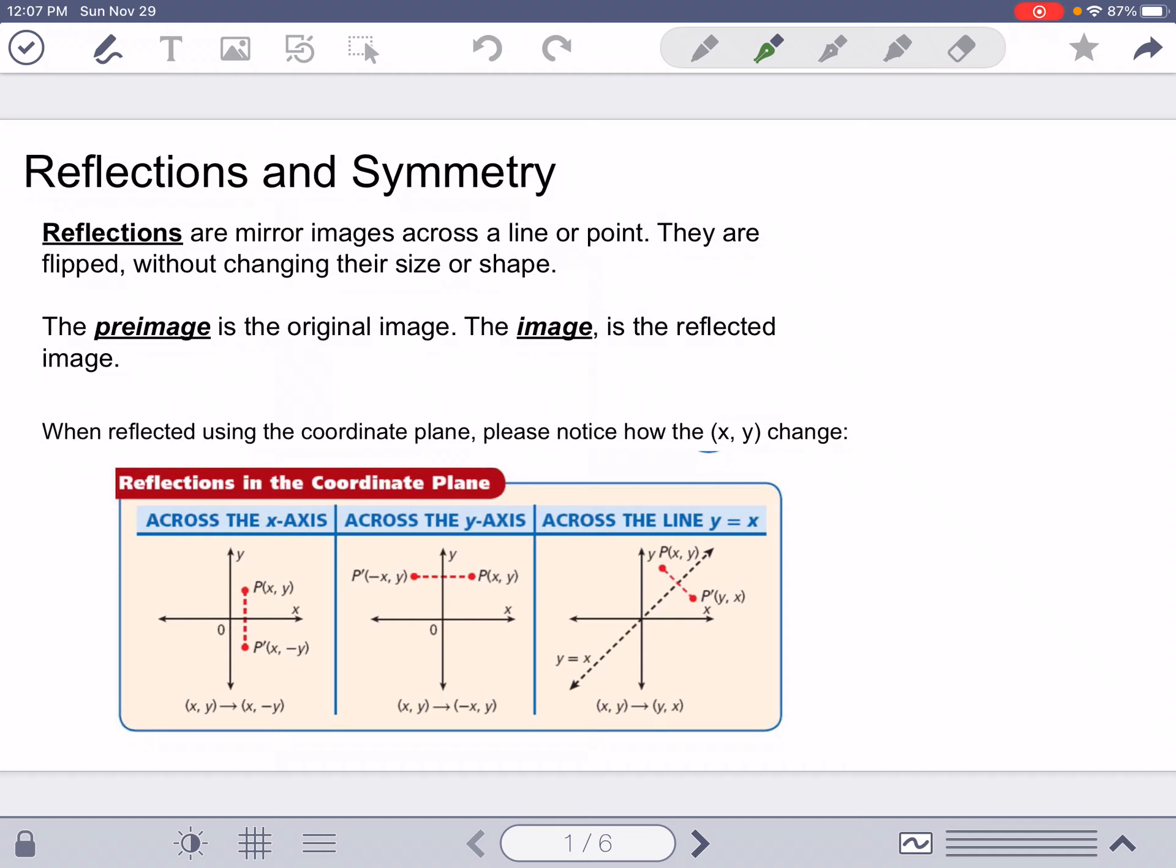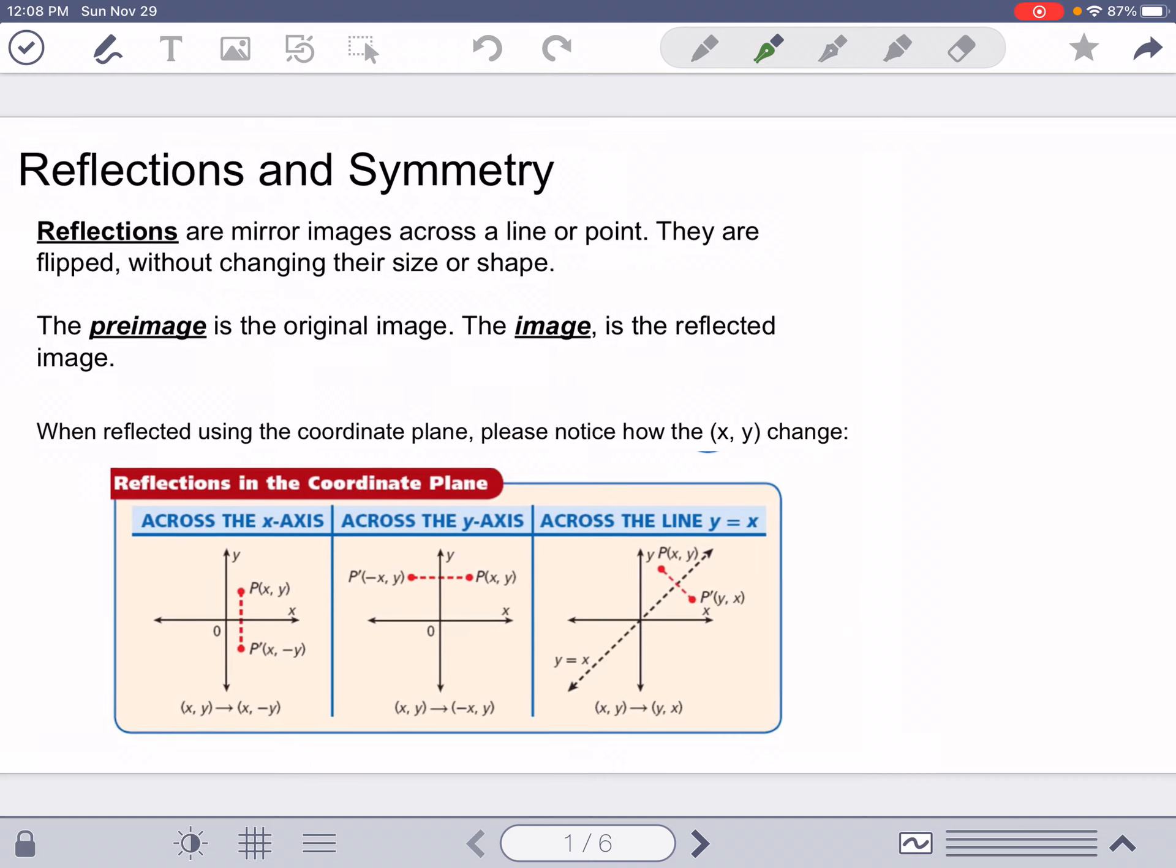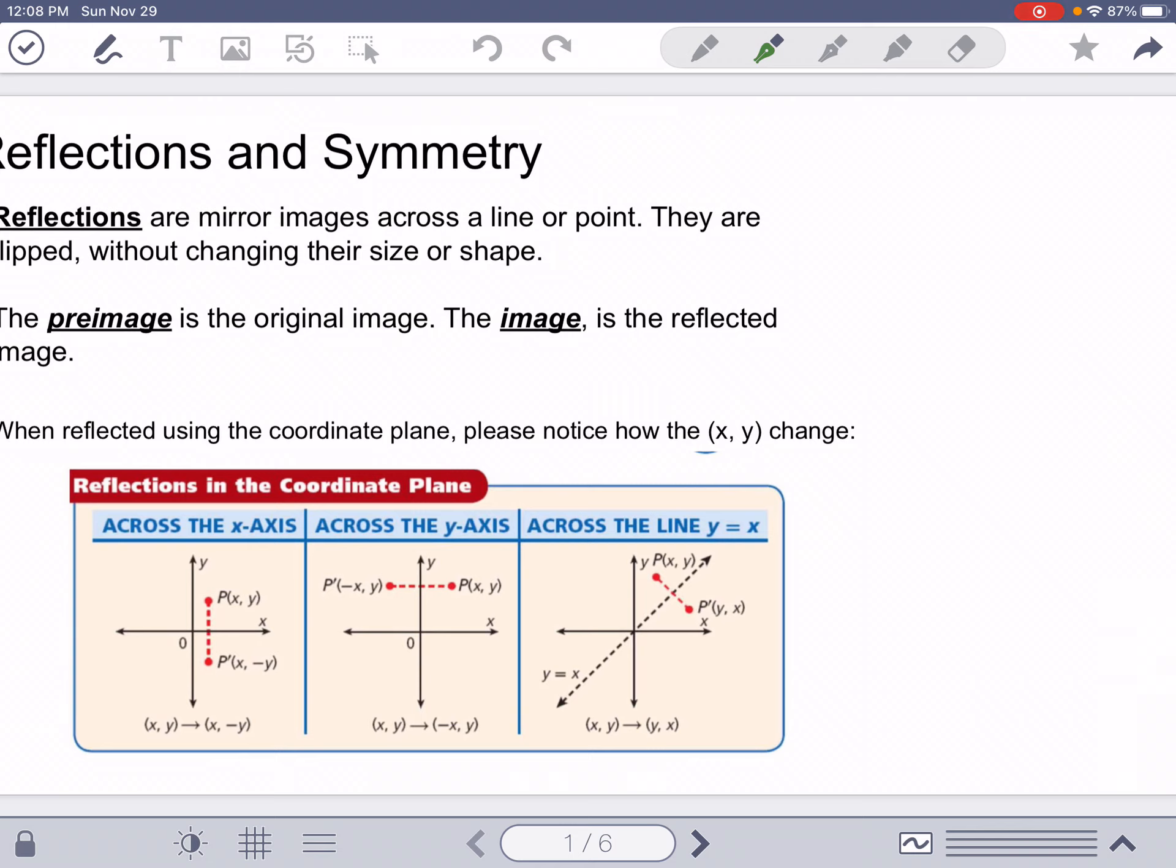The pre-image is the original image. The image is the reflected image. When reflected using the coordinate plane, I want you to take notice of how the x and the y change.